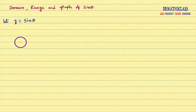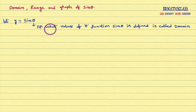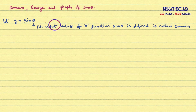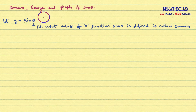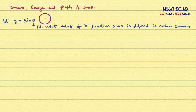Now we will try to understand what is domain and range first, then we will come to know what is the domain and range of sine theta. For what values of theta the function sine theta is defined is called domain of the function. For example, theta equal to 30 degrees — sine 30 degrees is defined. Theta equal to 90 degrees — sine 90 degrees is defined. Theta equal to 1000 degrees — sine 1000 degrees is defined. So for what values of theta the function sine theta is defined, that is called domain of this function.